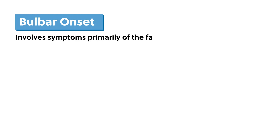Bulbar onset involves symptoms primarily of the face, mouth, and jaw, so people experience dysphagia, slurred speech, drooling, and over time, breathing difficulties. Their voices may sound harsh, and they may have difficulty articulating and experience fasciculations of the tongue.